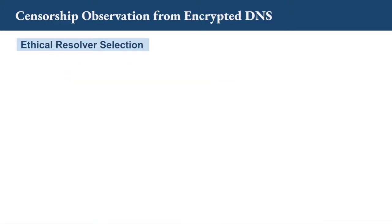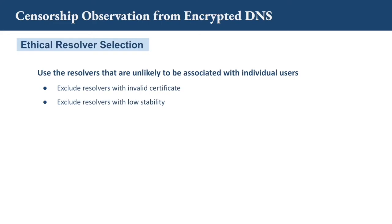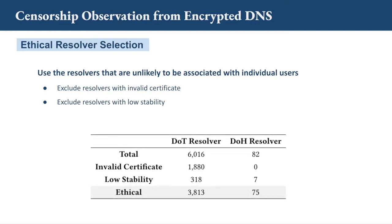There is an ethical consideration since we will use resolvers to resolve sensitive domains. We tried our best to exclude resolvers that could be associated with individual users by removing those with invalid certificates and low scalability, since they are not well-maintained public services. For stability, we tested resolver functionality every hour for 10 days, and excluded any resolver that failed a test. In total, we obtained 3,800 DoT resolvers and 75 DoH resolvers for our experiment.